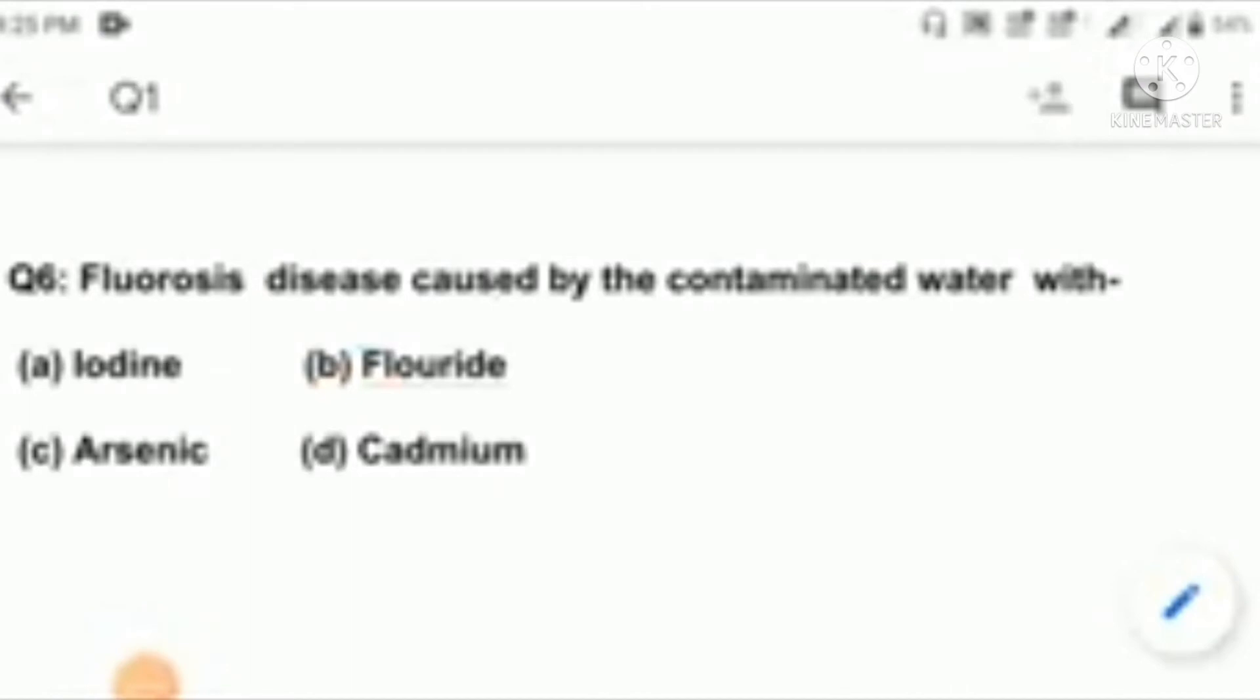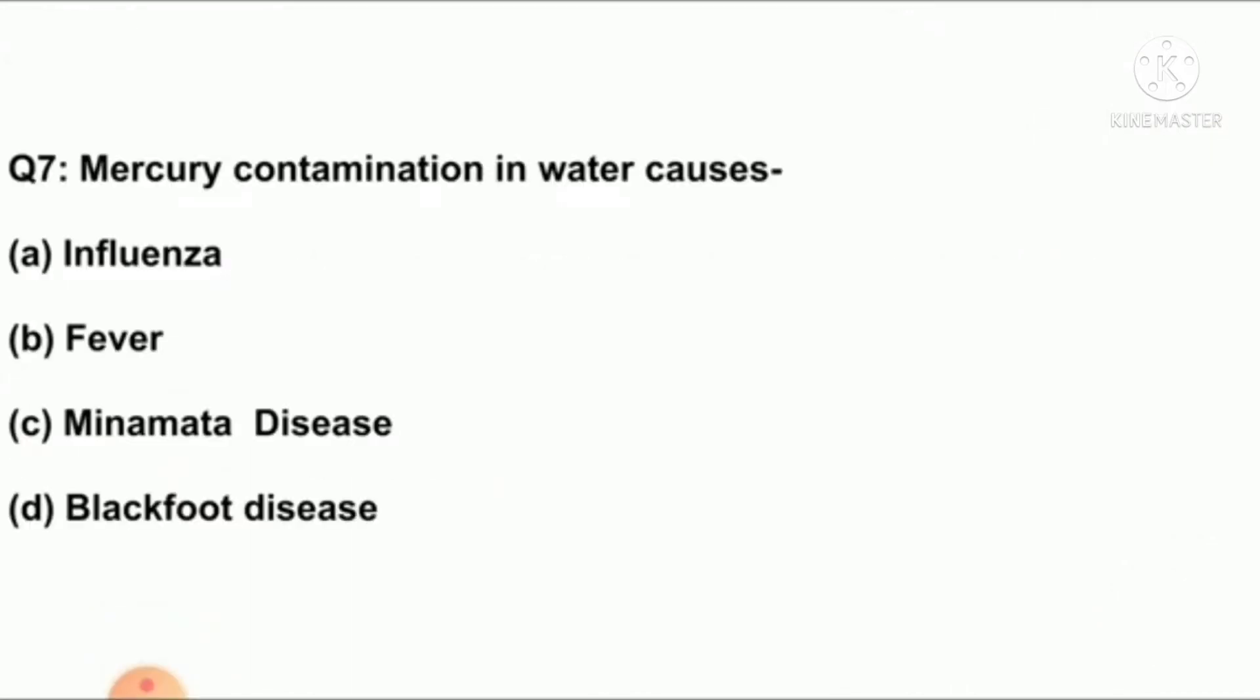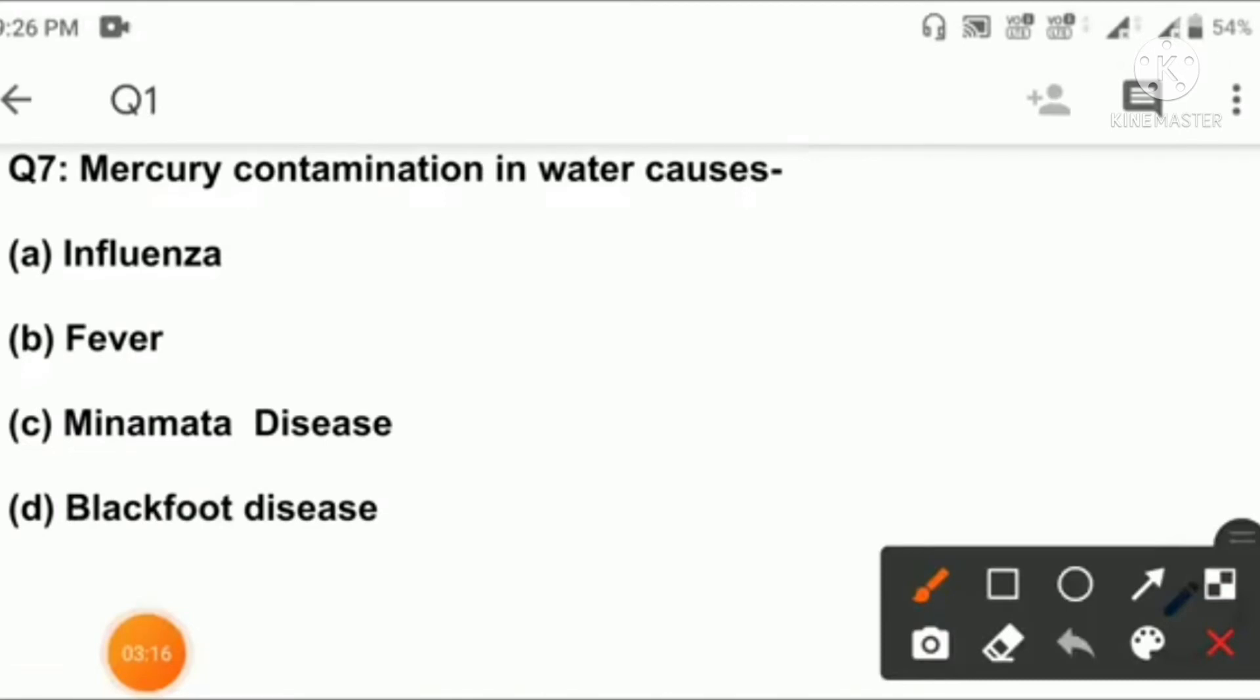Question number seven: mercury contamination in water causes option A: Influenza, B: Fever, C: Minamata disease, D: Blackfoot disease. Here the right answer is option C: Minamata disease.